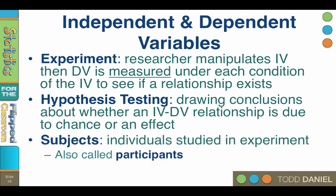Finally, the individuals being studied in the experiment are called subjects — but that's the case if they are non-human subjects. If they are human beings, we call them participants. So if you are studying animals, then your participants are subjects. But if you're studying people, then your subjects are participants. Make sure that you keep that straight.